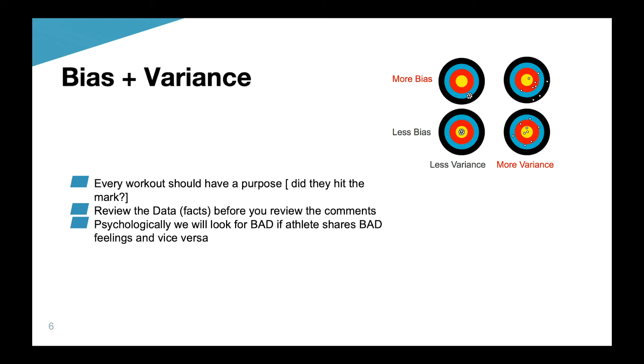More bias but less variance would still be considered a good workout — they're all grouped together. It depends on some of the conditions and other things the athlete might be dealing with. When we move towards more bias and more variance, that athlete's going to have a couple in the range we asked them to be in, but they'll be scattered all over the place. They may have started off too hard and faded but maybe still hit the mark. Ideally, we want a low amount of bias and a low amount of variance.